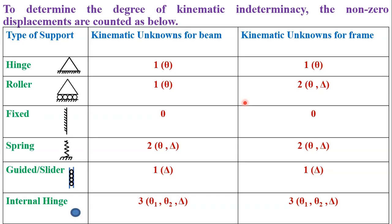Now let us see different cases. As we have discussed, different types of supports include hinge support, roller support, fixed support, spring support, guided slider support, and internal hinge, which is sometimes used in a structure. To determine the degree of kinematic indeterminacy, we have to calculate the non-zero displacements.